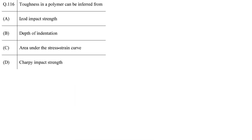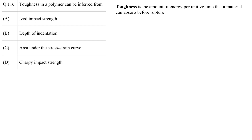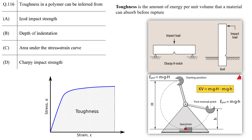This question is from mechanical properties of polymers. We have to identify methods used to measure toughness of a material. Toughness is the amount of energy per unit volume that a material can absorb before rupturing. Both tensile testing and impact strength tests measure the energy absorbed before rupture. Answers A, C, and D are correct: A and D are different methods to measure impact strength, and C — the area under the stress-strain curve — measures toughness using tensile testing. Option B is incorrect, as depth of indentation measures hardness, not toughness. Hardness is resistance to scratch; toughness is the ability to resist cracking or breaking under stress.